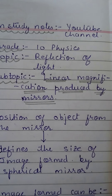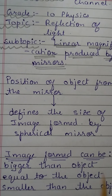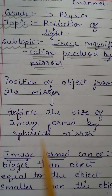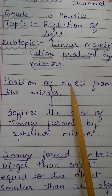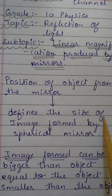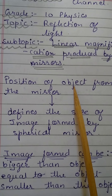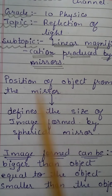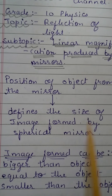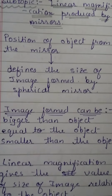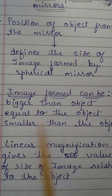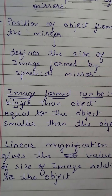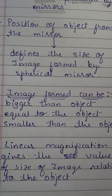So what is Linear Magnification Produced by Mirrors? The position of the object from the mirror defines the size of the image formed by the spherical mirror — whether the object is placed at C, between F and P, beyond C, or at focus. The image formed can be bigger than the object, equal to the object, or smaller than the object.